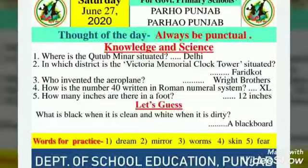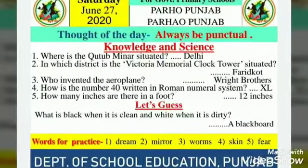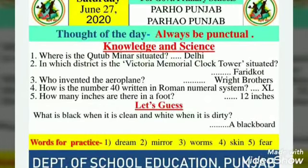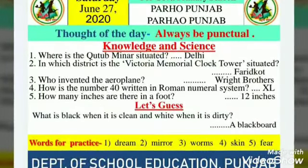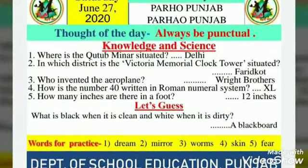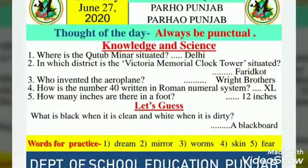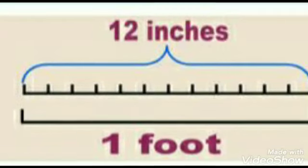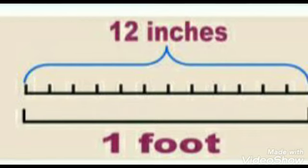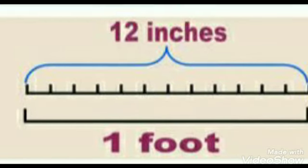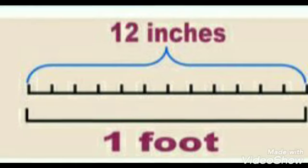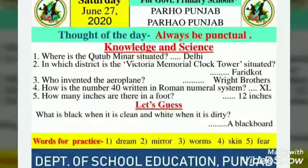Now the fifth question: how many inches are there in a foot? The answer is 12 inches. In a foot there are 12 inches — 12 inches makes a foot. Both inches and foot or feet are units for the measurement of length.